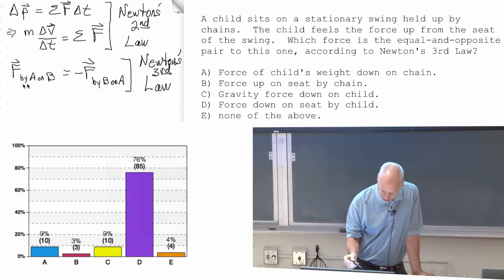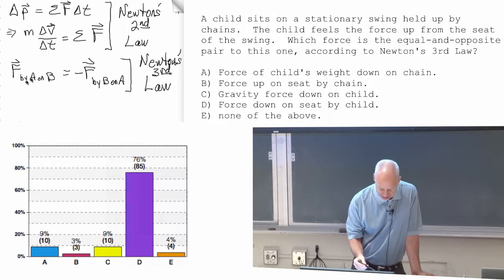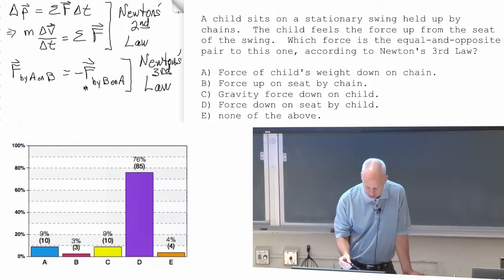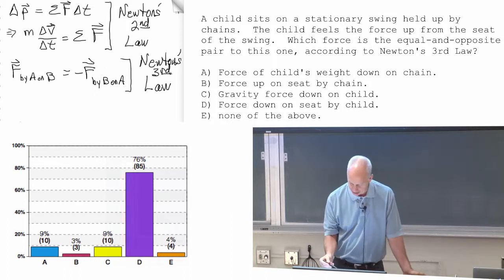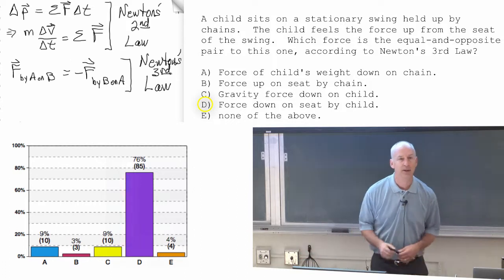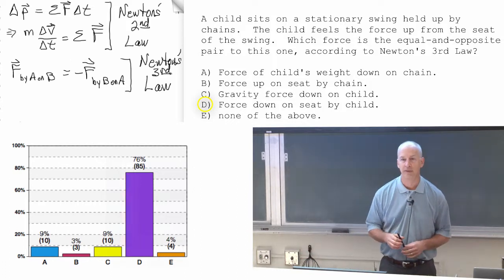Newton's third law. Force by seat on child equals the negative of force by child on seat. Force down on the seat by child. D is the Newton's third law pair of the first force.